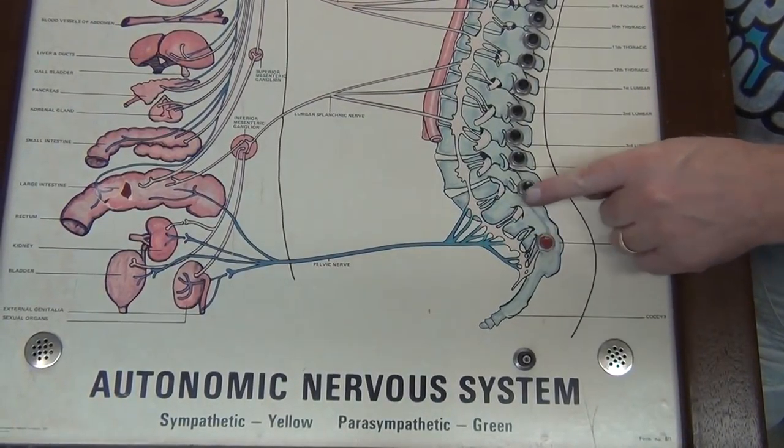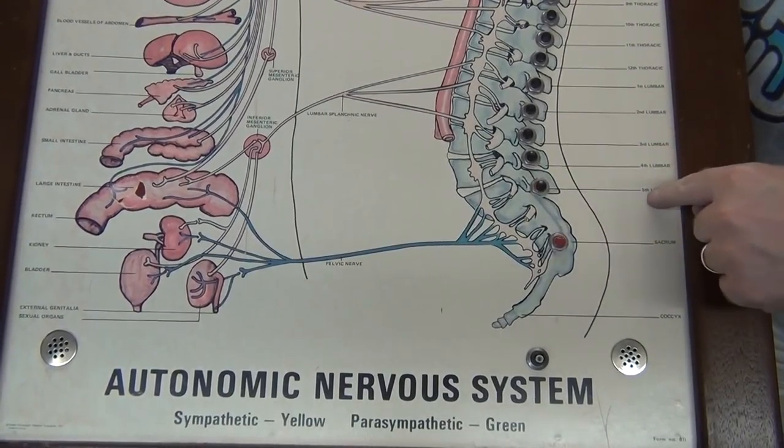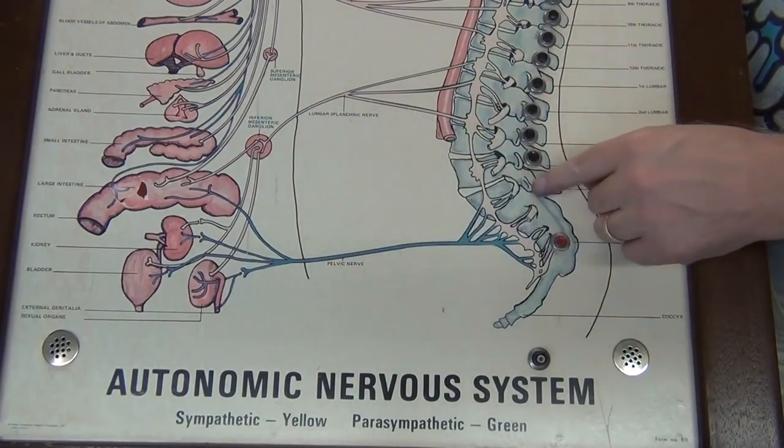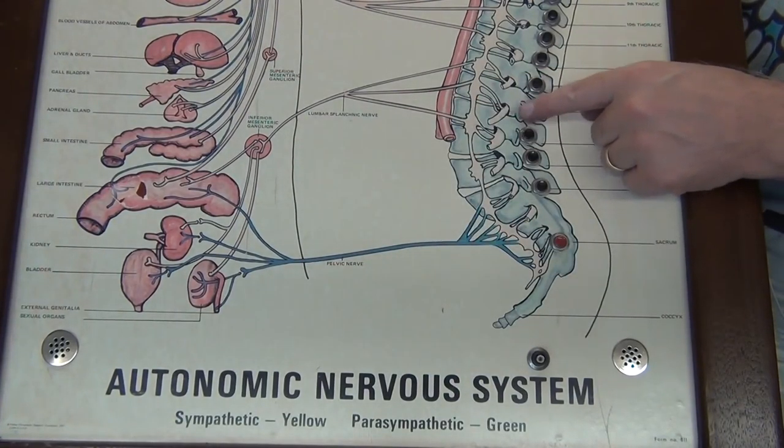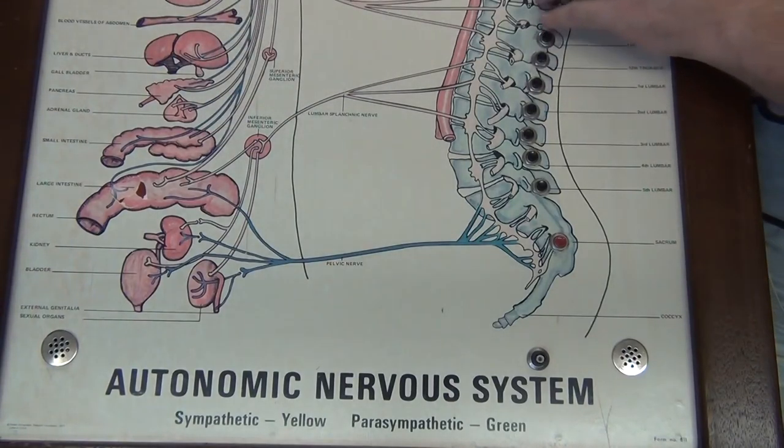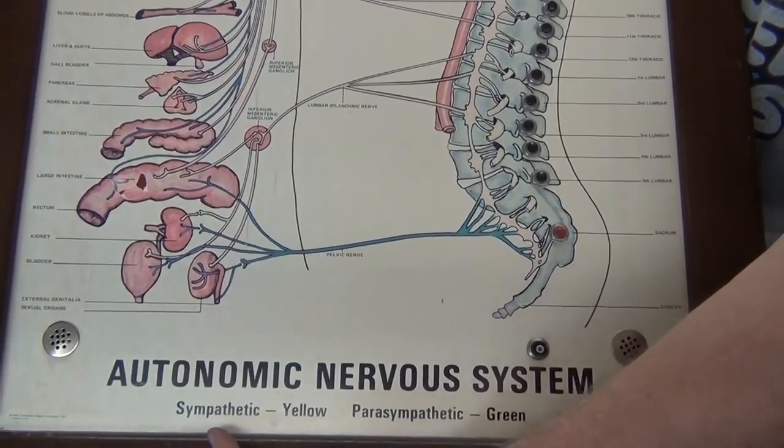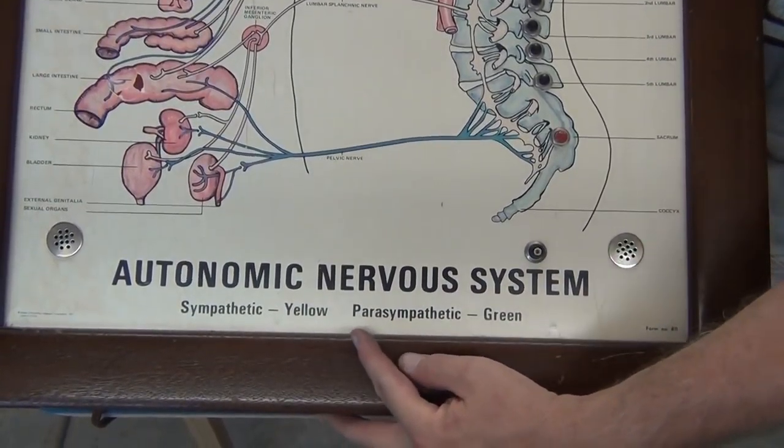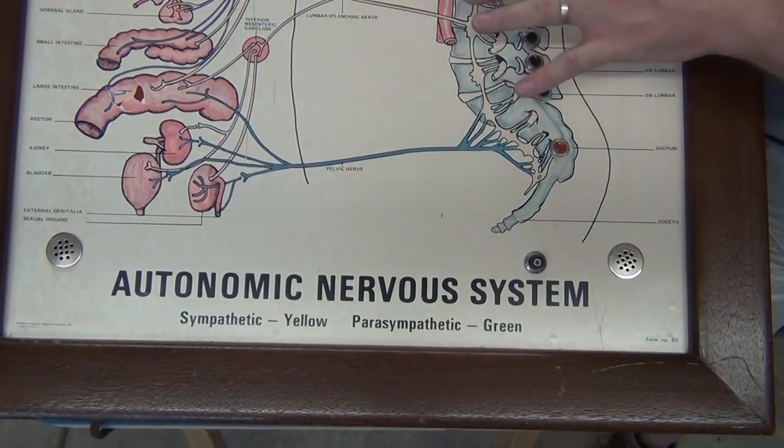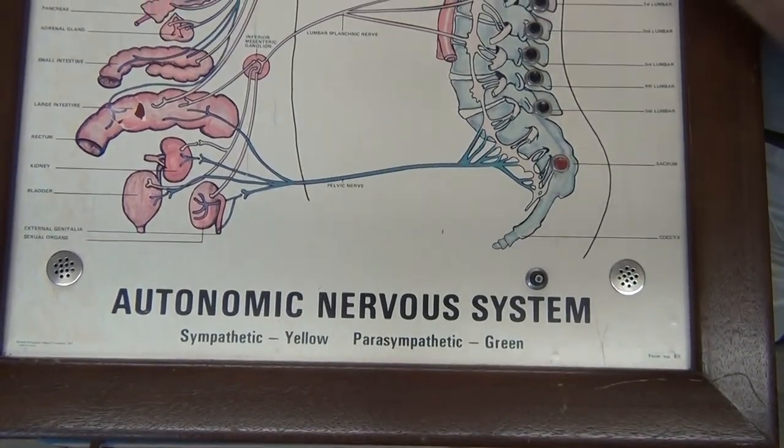And as you push these buttons, it essentially interrupts that nervous system. Like this is the fifth lumbar. And when I push that, it basically will turn off whatever those nerves go to. And that's just sort of to see what organs are affected by the nerves leaving the spinal column here. Down here at the bottom it says sympathetic is in yellow and parasympathetic is in green. But I think there's a lot of fading on this. We're not going to try and restore the color or anything. We're just going to make sure the buttons work and the lights work.